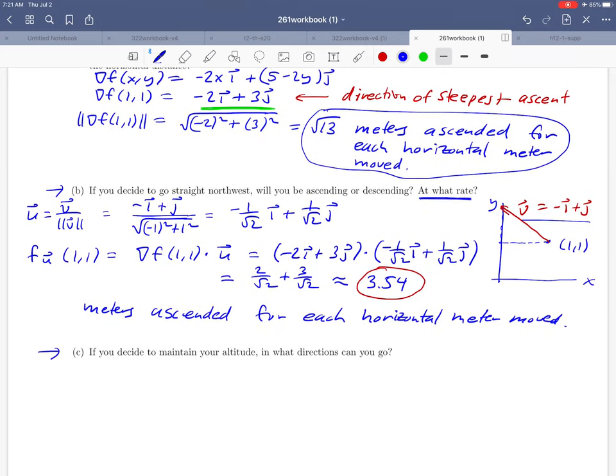All right and then we come to the probably the most interesting question out of all of these. If you decide to maintain your altitude in what directions can you go? Well what does maintaining your altitude mean? Well it's like saying that your function is not changing at all. We want the height to remain constant which means that the rate of change of the height should be zero. So a way of rephrasing this question is we're trying to find a vector u such that the derivative in that direction is zero. That would be saying that we're maintaining our altitude because our function is not changing at all.